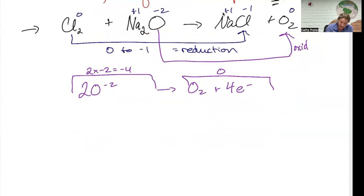This would be my answer to A. B wants the reduction half reaction. I'm going from Cl₂ to Cl minus. I want to balance chlorines first.